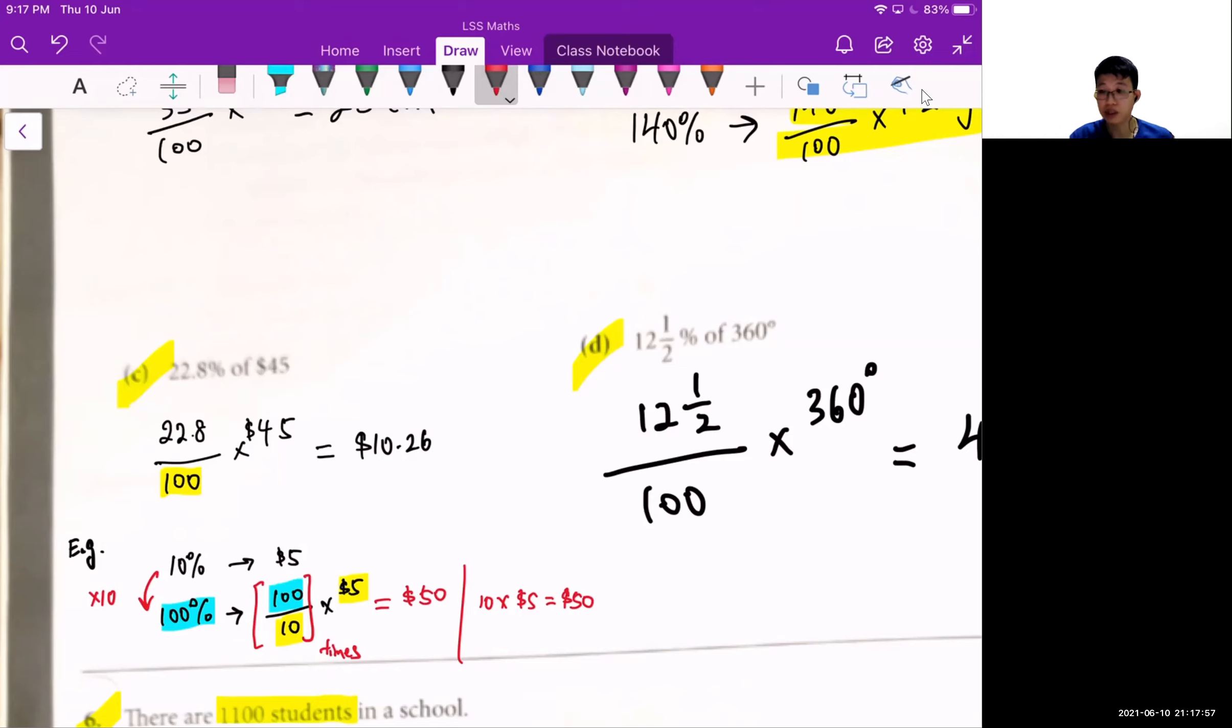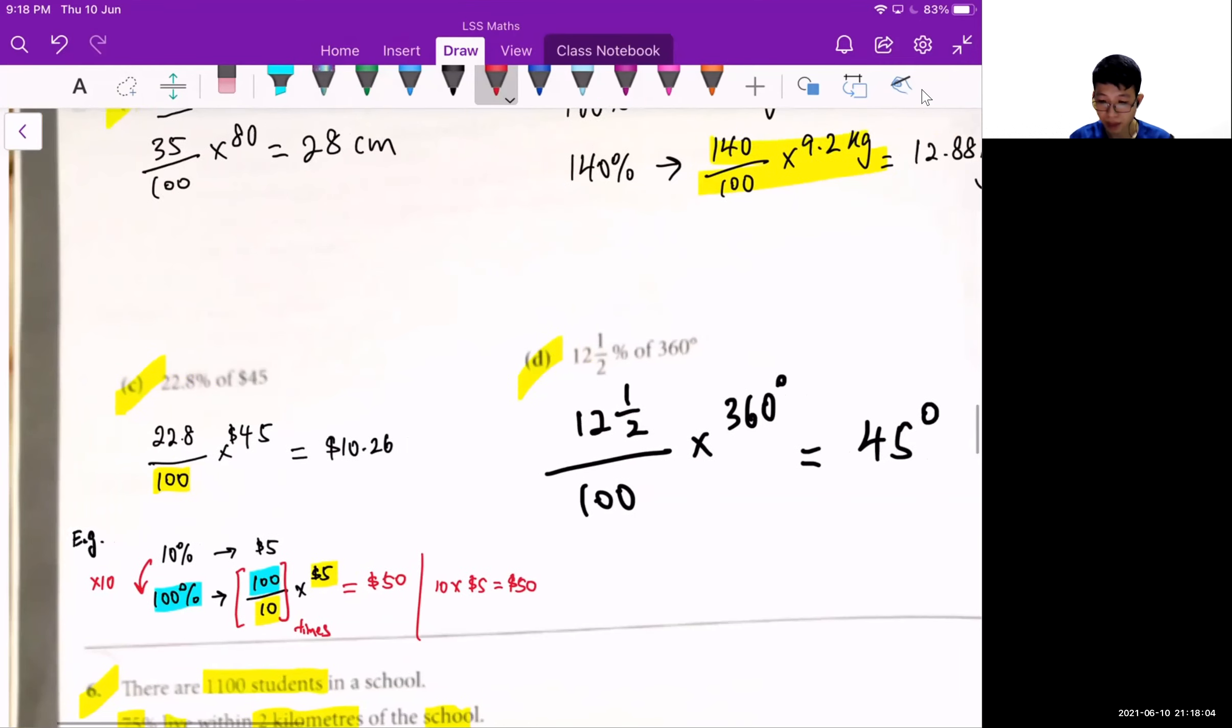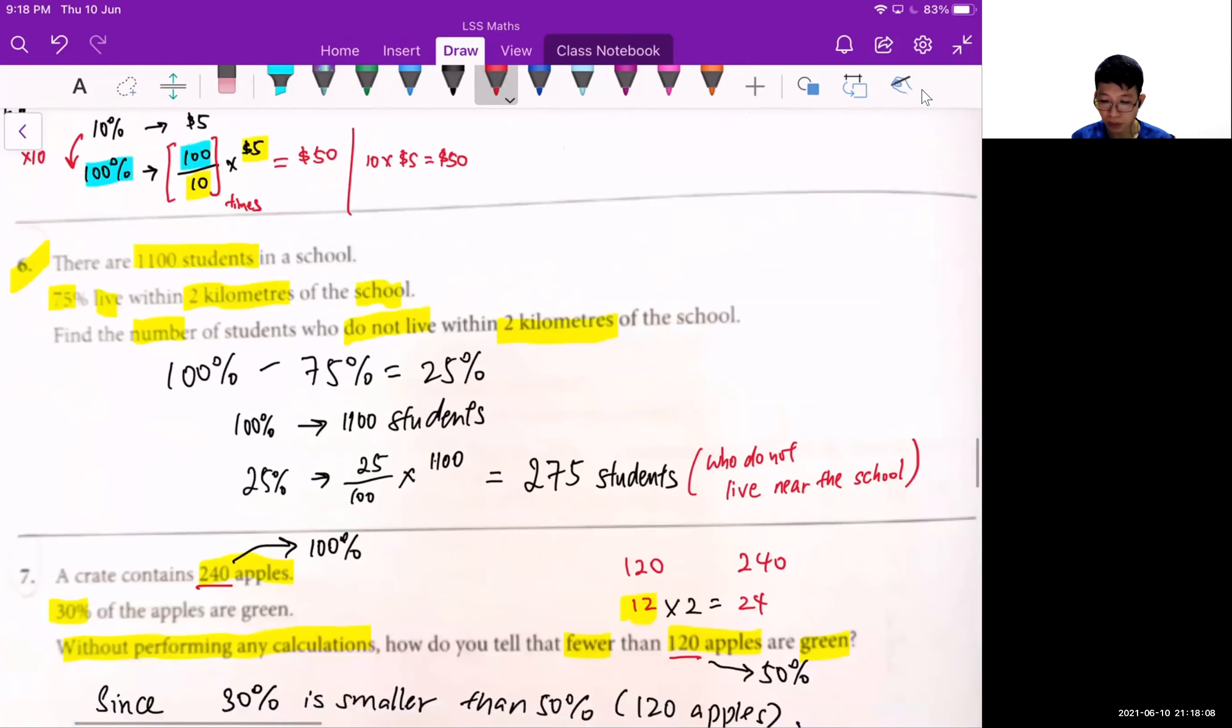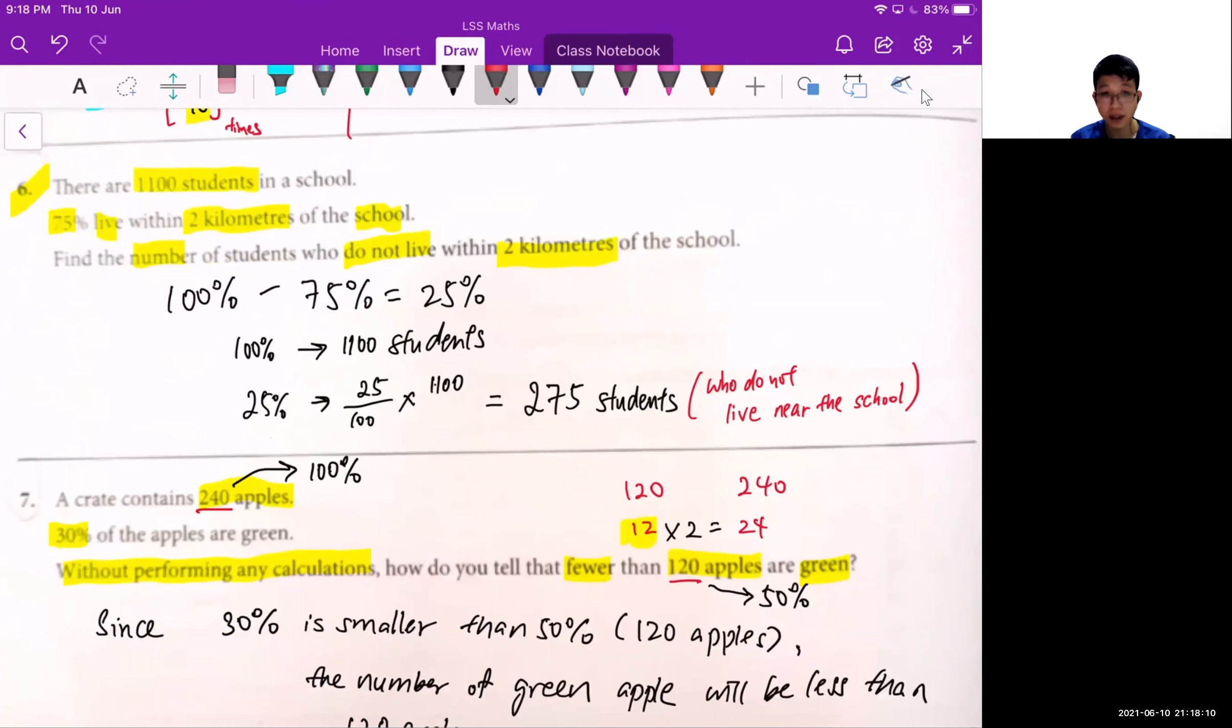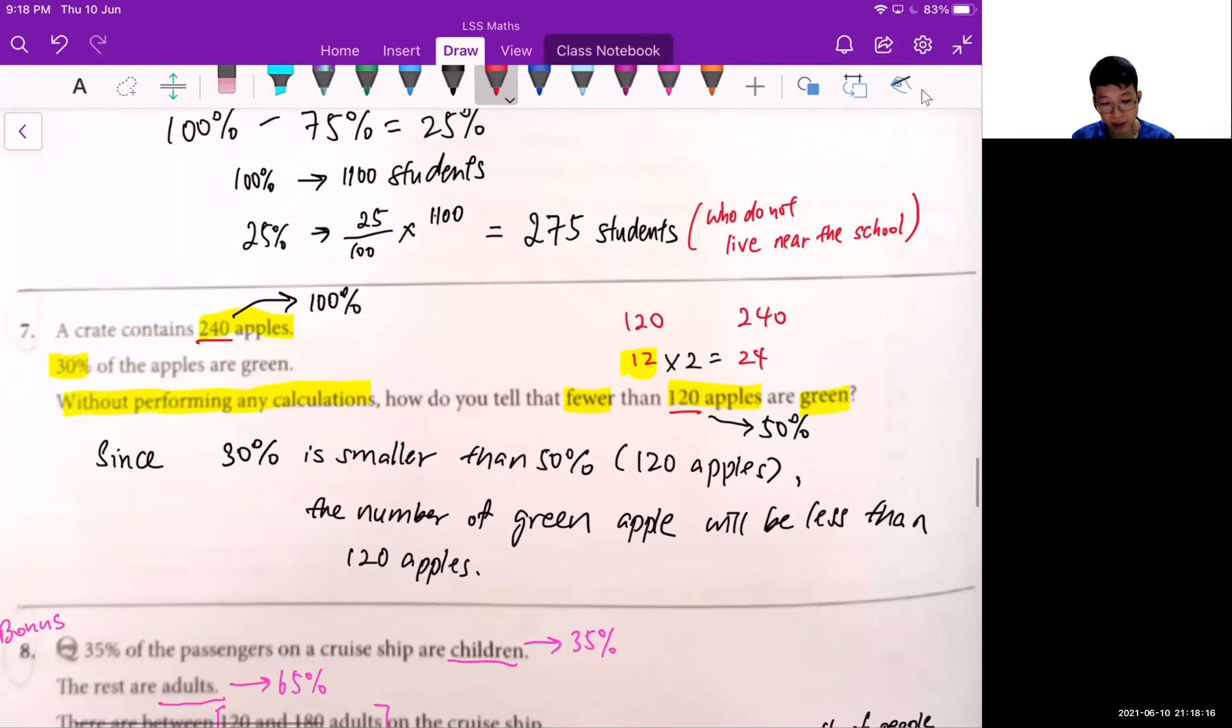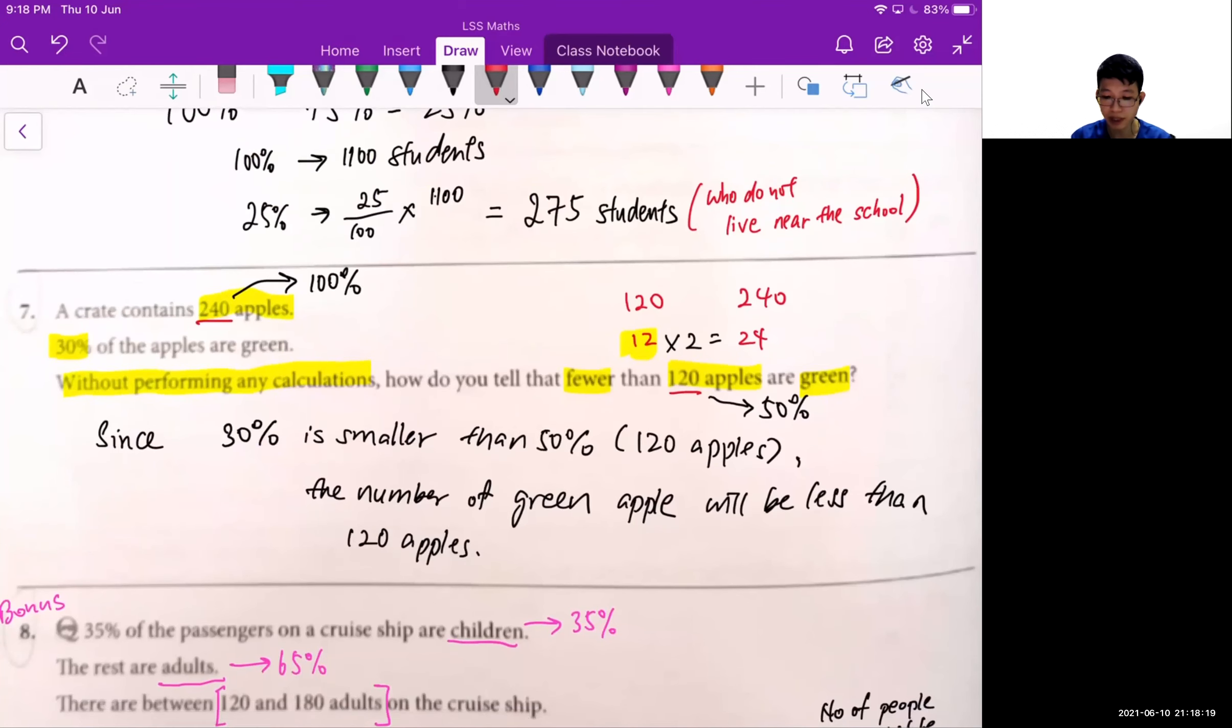So I hope this clarifies some of your doubt. If you are still unsure, you can always drop me a text. I will go through with you personally. Okay, so for the rest of the questions, please try to review yourself. If you are still unsure what is it about, please ask. Because if you don't ask, when school reopens, you'll be proceeding with chapter 8 already.